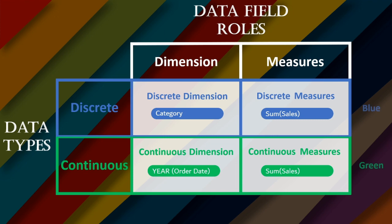We can see that some fields are blue in color and some are green. Blue defines Discrete and green defines Continuous. Fields under Dimensions show level of detail, and fields under Measures show aggregation. The key point to remember in Tableau is that blue refers to discrete fields and green refers to continuous fields. Whenever a user is working on a blue color field in Tableau, it means they are working on discrete fields, and if working on green fields, they are working on continuous data. This is very important from a certification point of view.